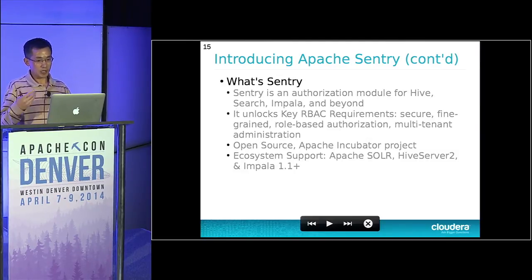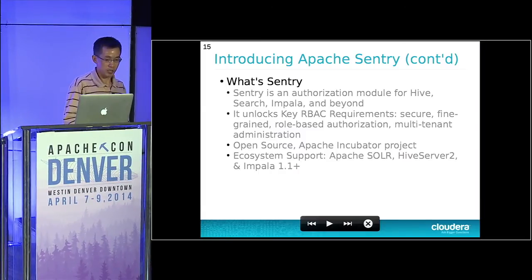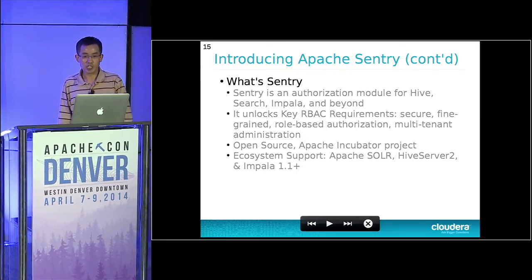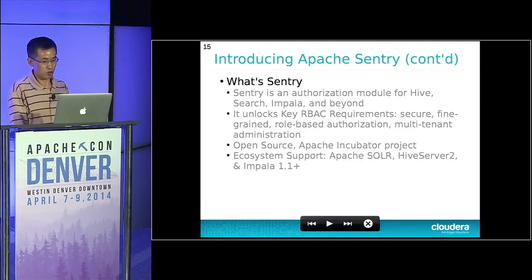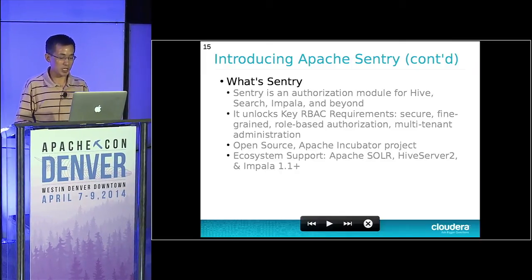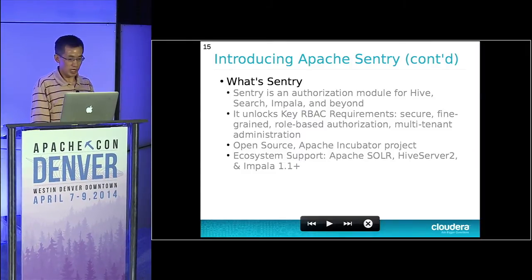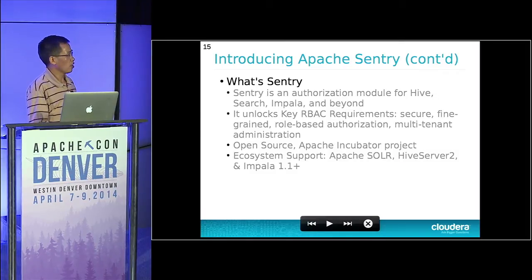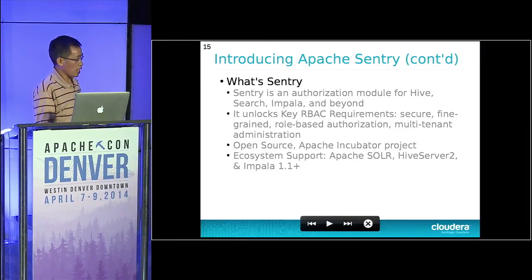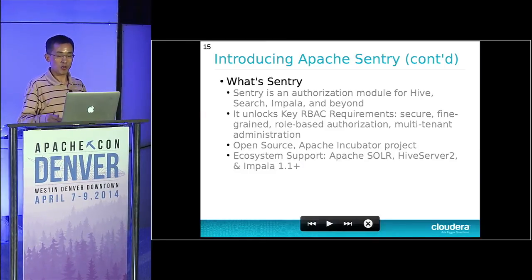So what is Sentry? Sentry is the authorization module for Hive, Search, Impala, and beyond. It tries to solve the problems we mentioned. It unlocks key role-based access control requirements such as being secure, fine-grained, and role-based with multi-tenancy support. Apache Sentry is open source and has been incubating for almost four years. It has ecosystem support — today Sentry is used in Apache Solr for search, Hive Server 2, and Cloudera Impala 1.1 and above.